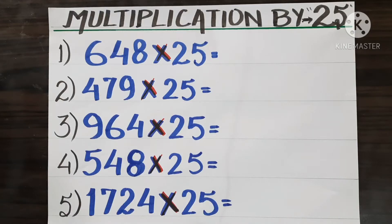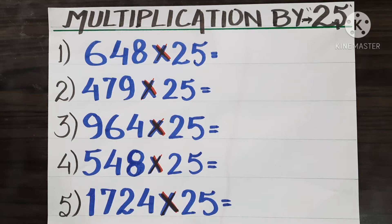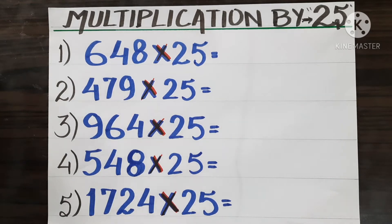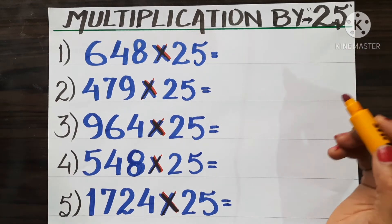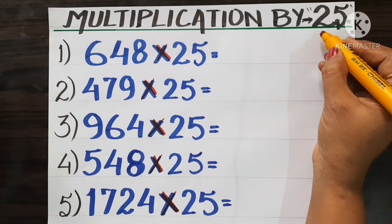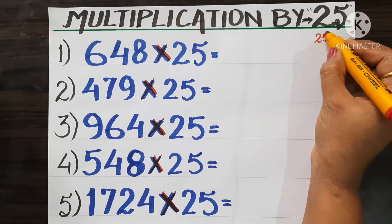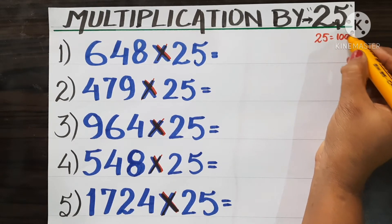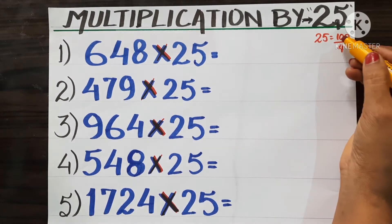Hello students, welcome to Vedic math tricks and techniques classes. Today I am going to give you the shortcut of multiplication by 25. As you all know, 25 is equal to 100 divided by 4, because when you do 100 by 4 you get 25.